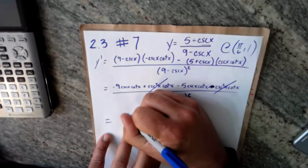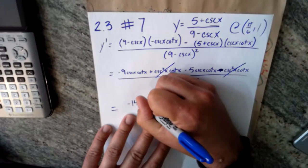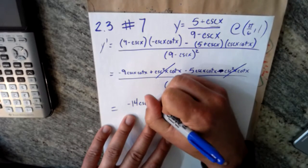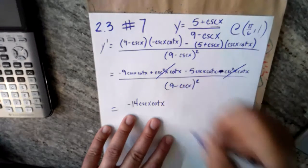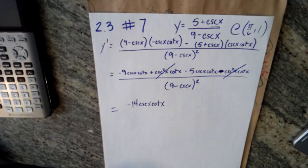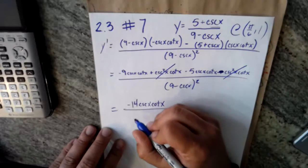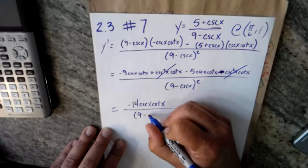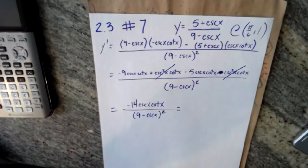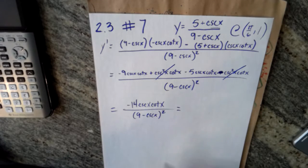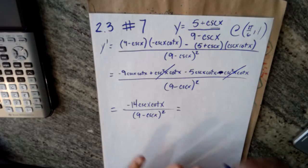Oh, so you get negative fourteen cosecant x cotangent x over nine minus cosecant of x squared.